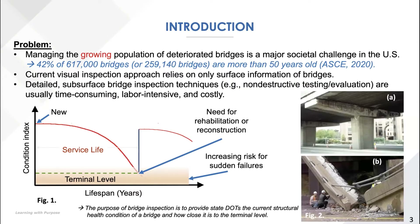We have a growing population of deteriorated infrastructure systems such as bridges in this country to be managed. About 42% of highway bridges in the US are already more than 50 years old, and most of them are only inspected by visual inspection at least once every two years. But visual inspection only provides surface information of bridges. If we want to perform detailed or subsurface inspection, that process is usually time consuming, labor intensive, and very expensive.